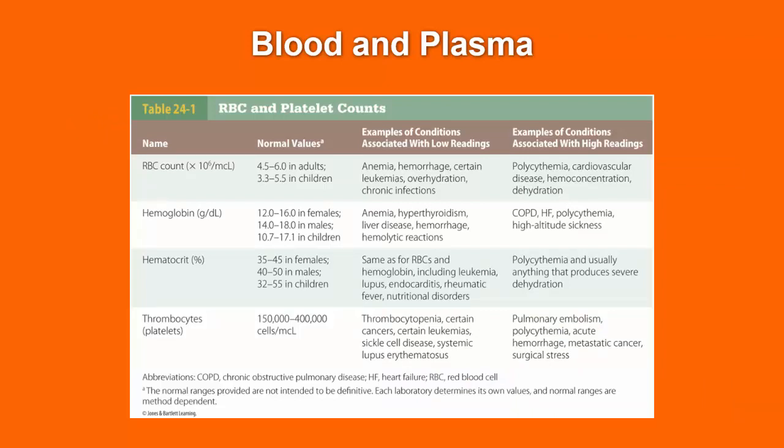Laboratory values for someone who is possibly anemic or hemorrhaging include the H&H — hemoglobin and hematocrit. Normal values vary significantly between males, females, and children. H&H are good indicators to determine if someone is bleeding, though factors like high altitude, COPD, and polycythemia can affect the numbers. Thrombocytopenia is low thrombocytes, caused by certain cancers or leukemias. High platelet readings may indicate pulmonary embolism, polycythemia, or other cancers.